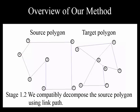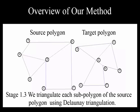We then compatibly partition the source polygon using the link path found in the previous step. We triangulate each source sub-polygon using Delaunay triangulation, which can maximize the minimum interior angle and avoid long thin triangles.